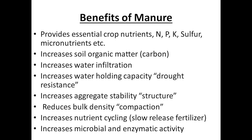Let's talk about some additional benefits of manure. It provides NPK, sulfur, and lots of micronutrients. It can increase organic matter by increasing carbon. It increases water infiltration — where manure has been placed correctly, you see better aggregate stability and better bulk density, which definitely increases water infiltration and gives some drought resistance, acting like a sponge. Better structure, better aggregate stability, and it can reduce compaction.